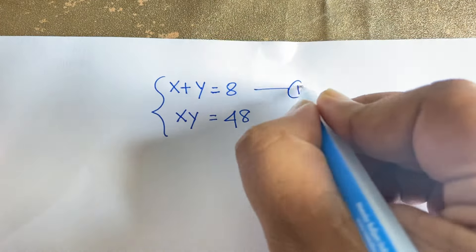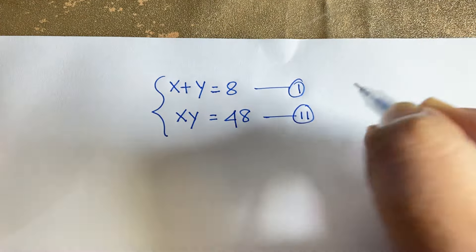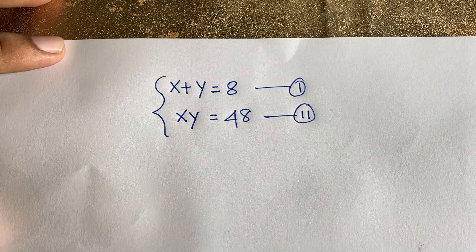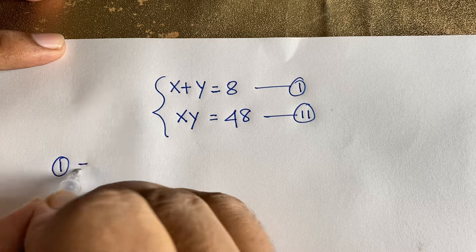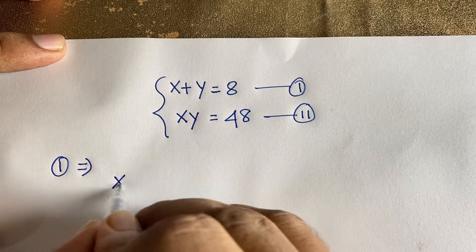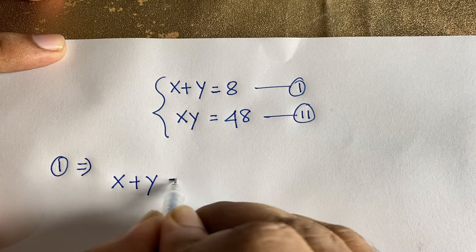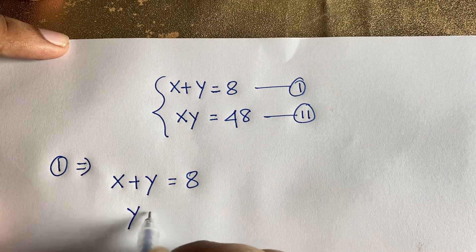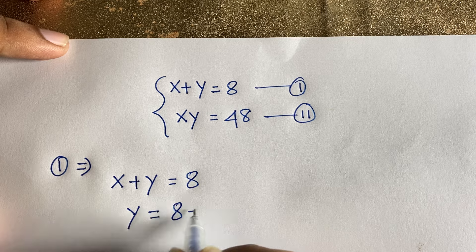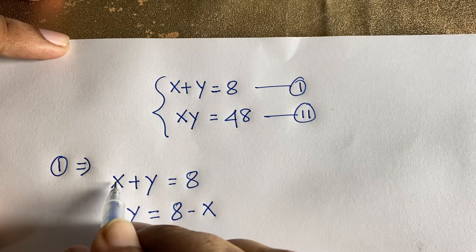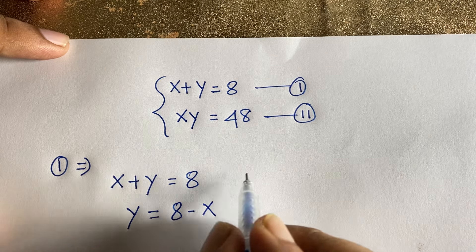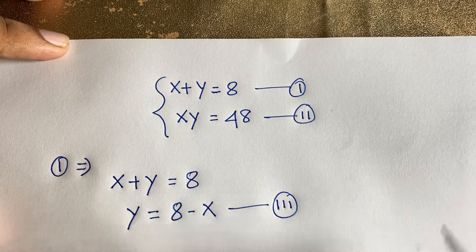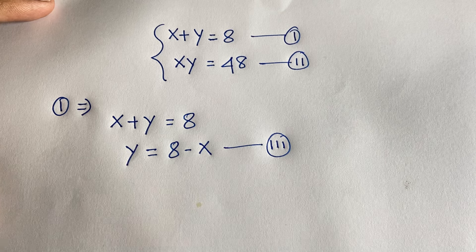This is our first equation and this is our second equation. From the first equation, x plus y equals 8, I can easily isolate y. So y is equal to 8 minus x — I just move x to the right side, it becomes negative x. This is our third equation.